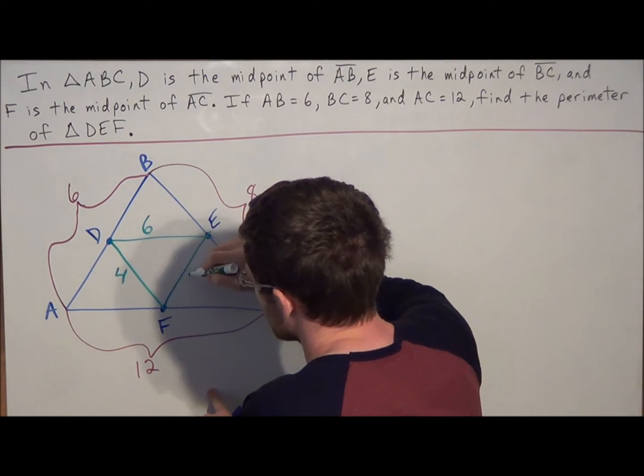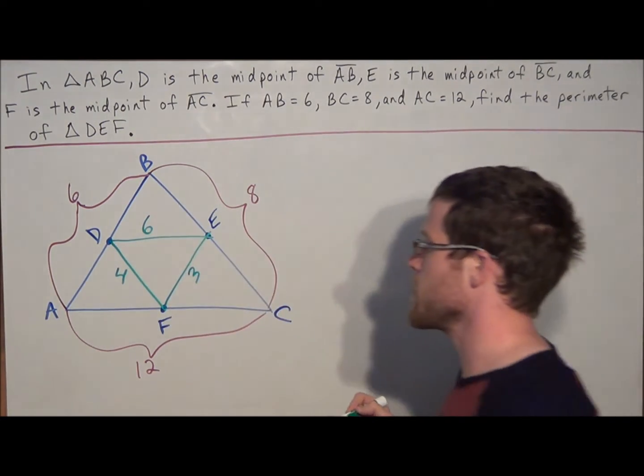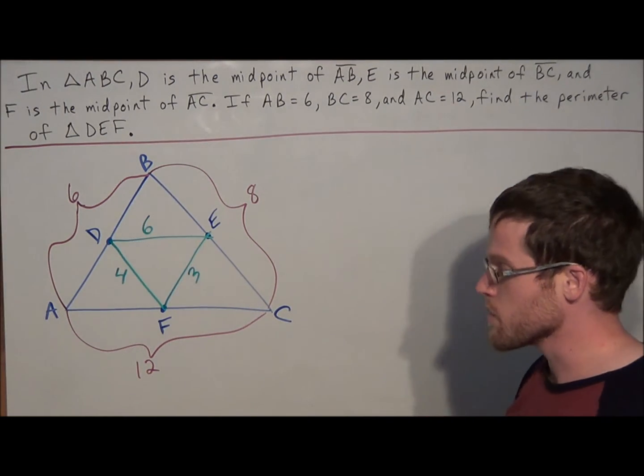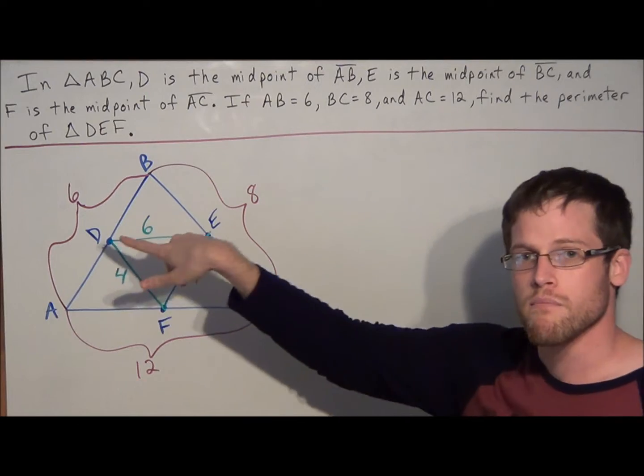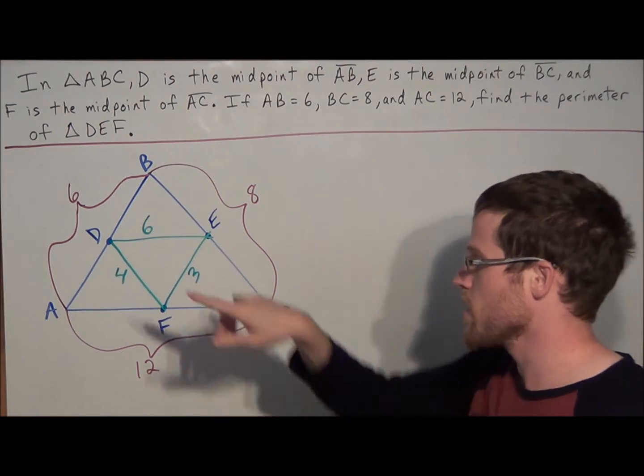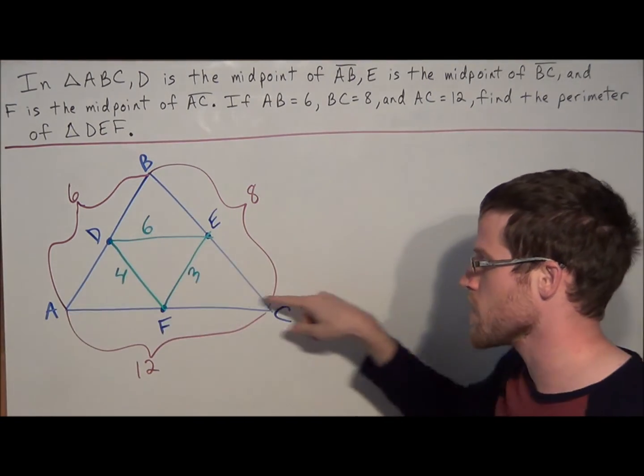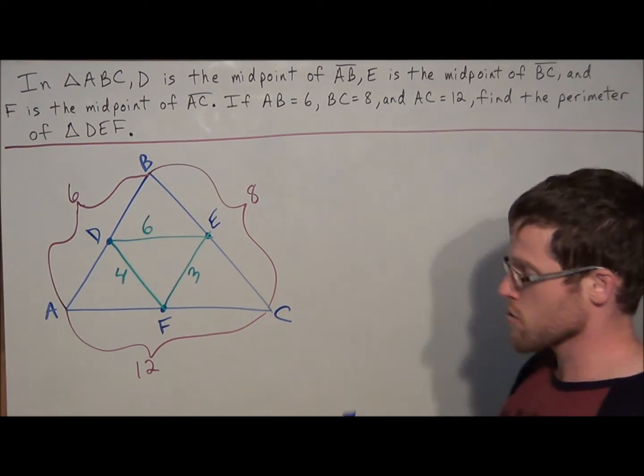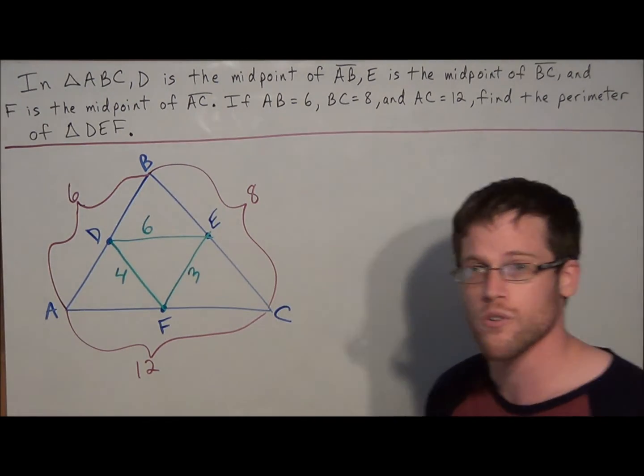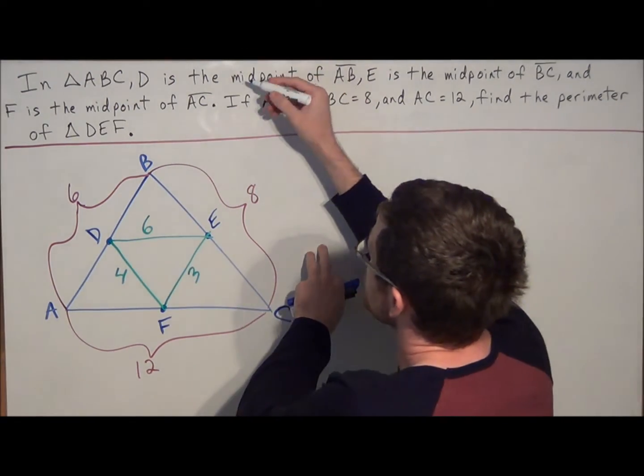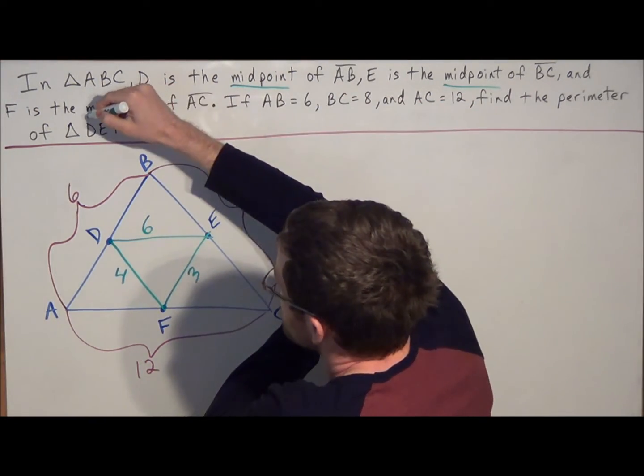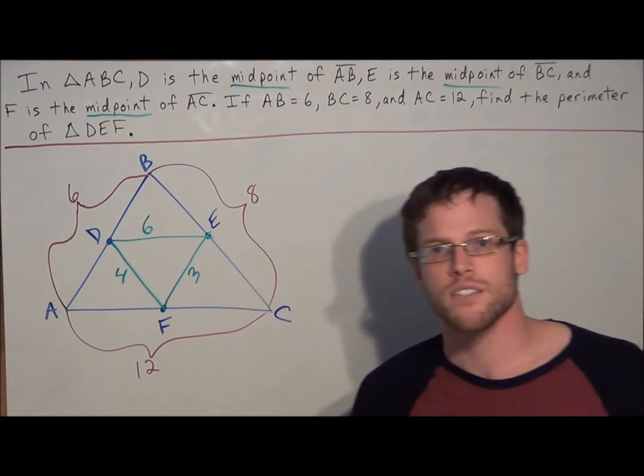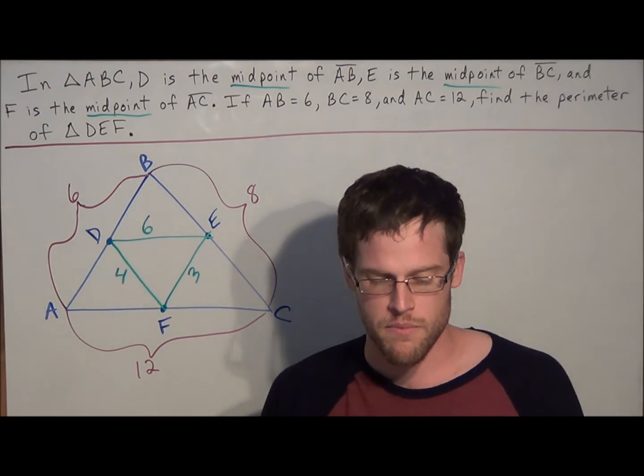So once again, all we're doing is applying this theorem, which states that when we connect the midpoints of two sides of a triangle, it's parallel to the third side, and it's half the measure. So the key words that you have to look out for in this type of problem is the word midpoint. The fact that we have three midpoints allows us to activate this theorem and use this concept of midsegments.